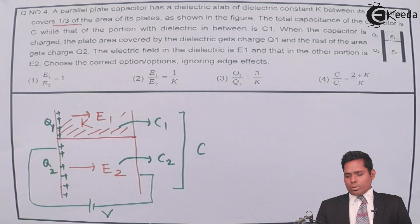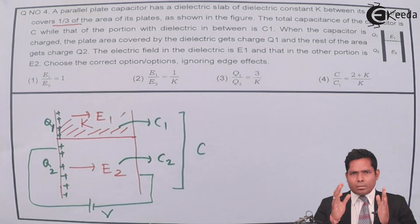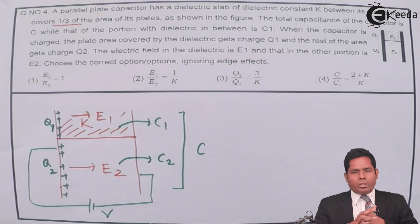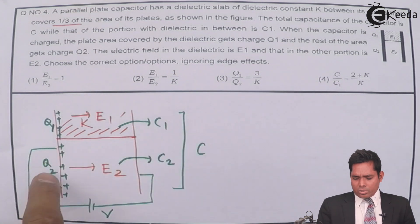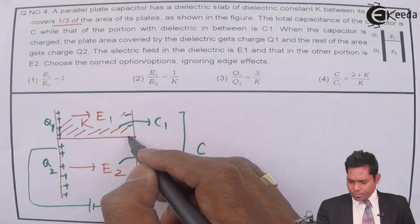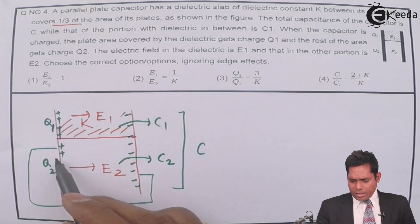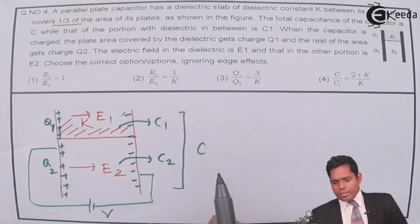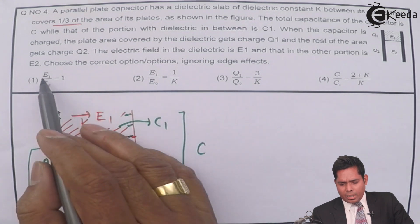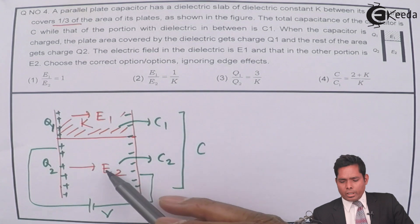The battery voltage is V. Initially there is no charge in the capacitor; after connecting the battery, the upper plate gets positive charge and the lower plate gets negative charge. The dielectric part acquires charge Q1 and the remaining part acquires charge Q2. Now we have to check the options. The first option states that the ratio of electric fields E1 to E2 is 1.